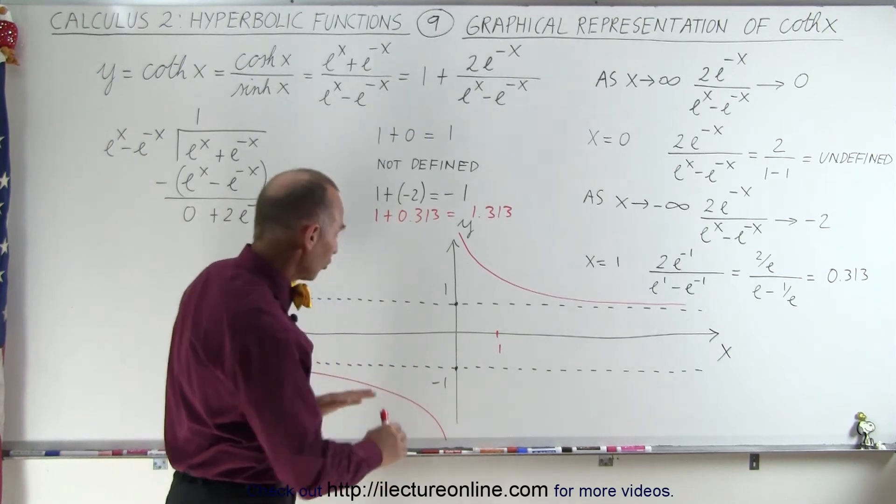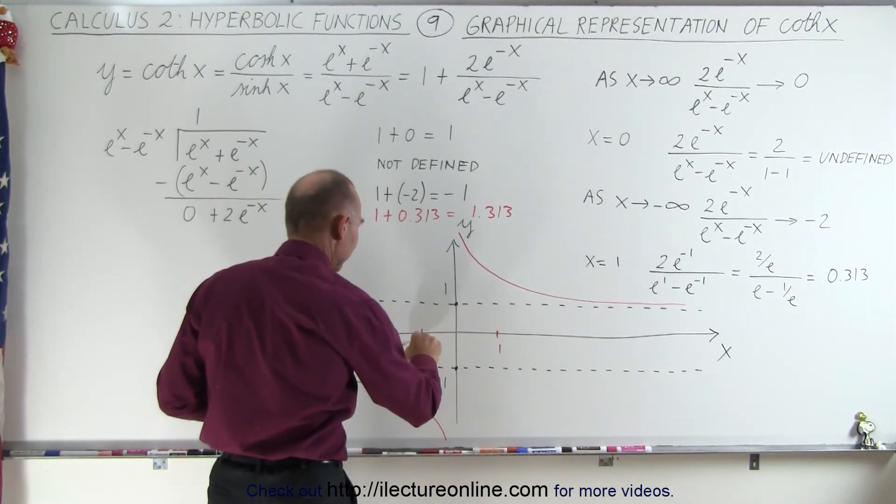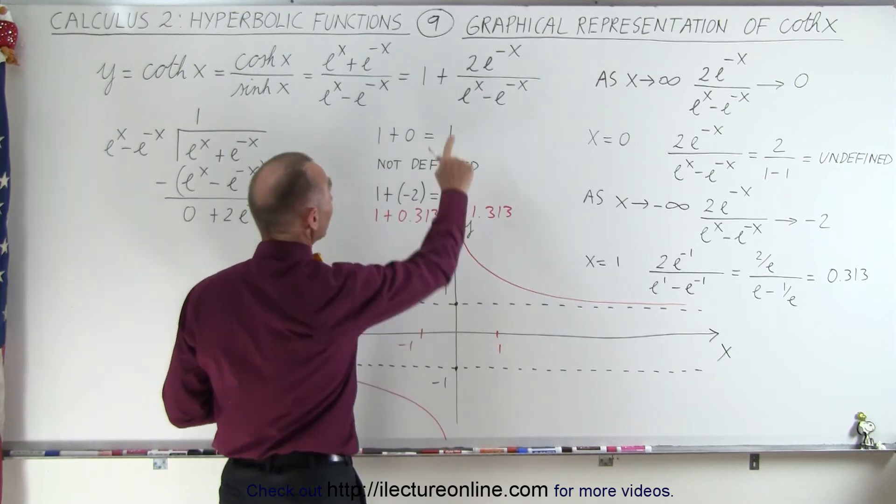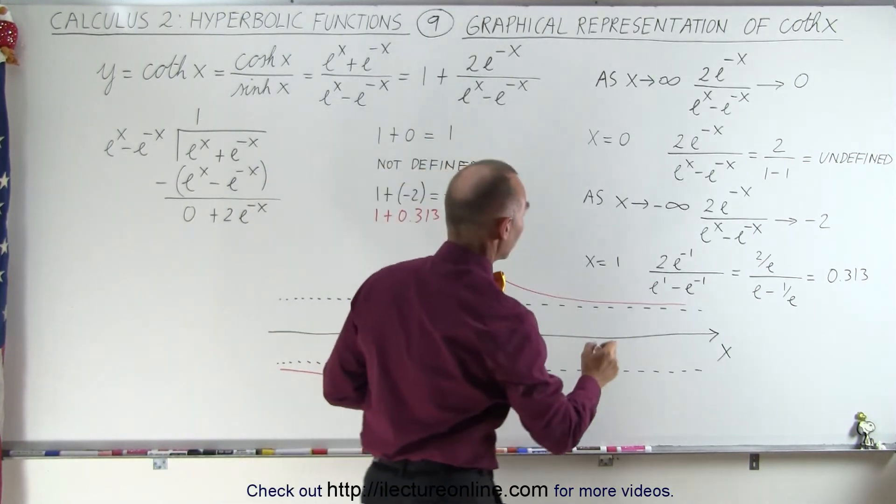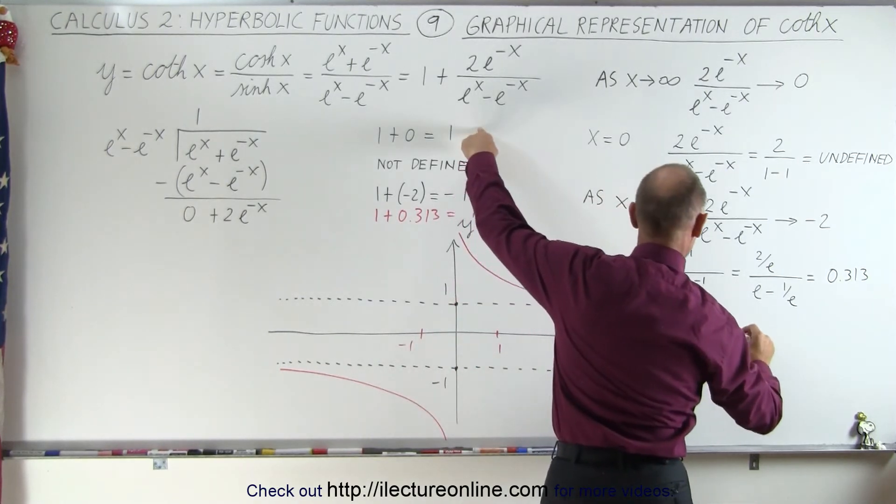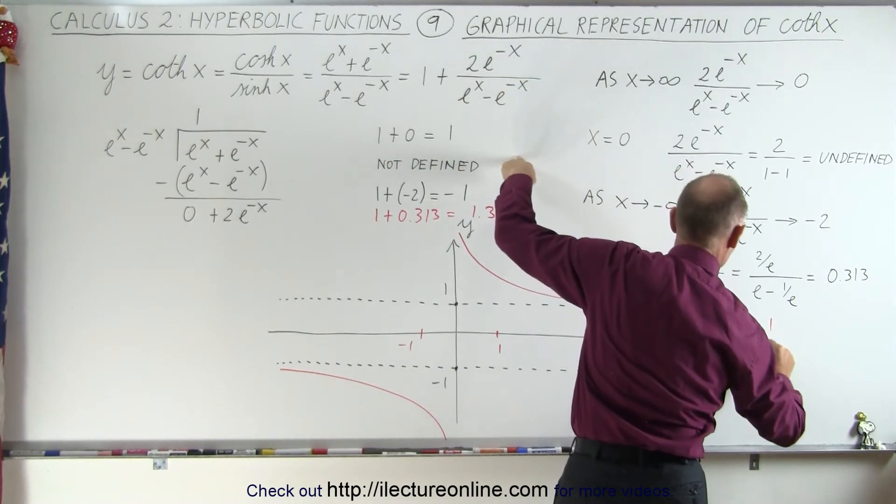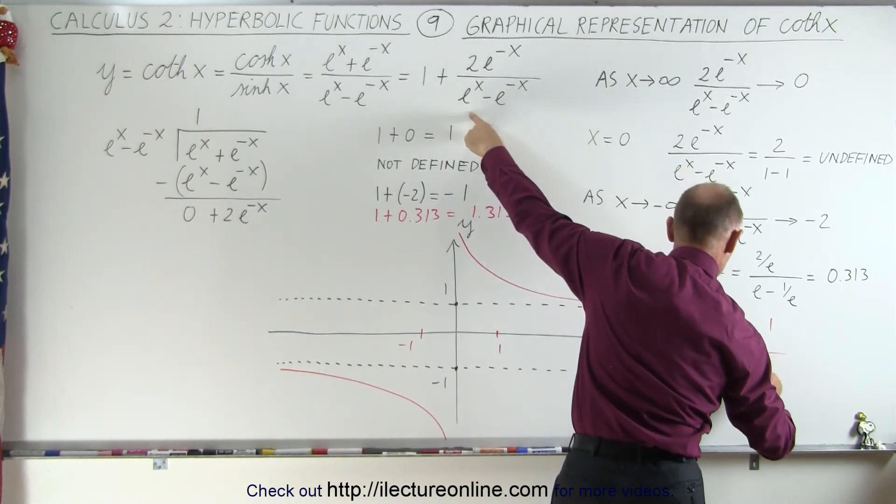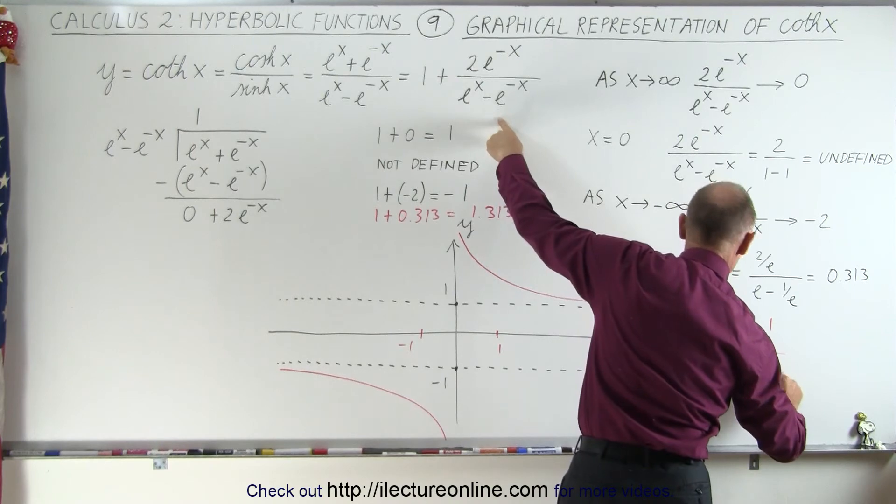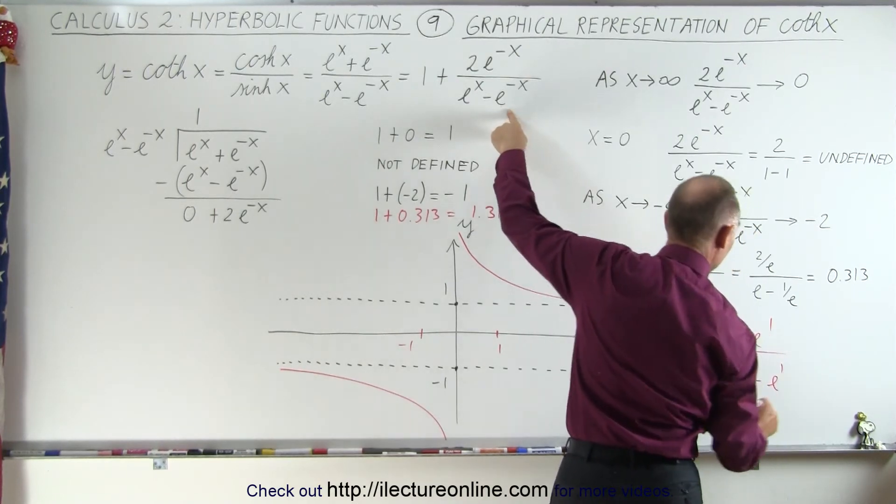Just to make sure we have the curve correct, what would happen when we plug in x equals minus 1? When we plug in minus 1, we end up with 2e to the 1 divided by e to the minus 1 minus e to the plus 1.